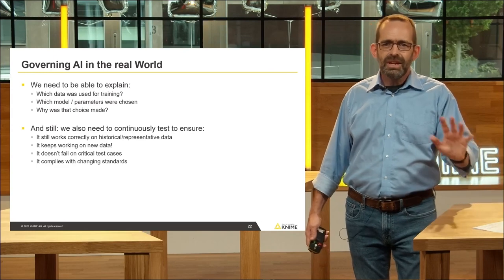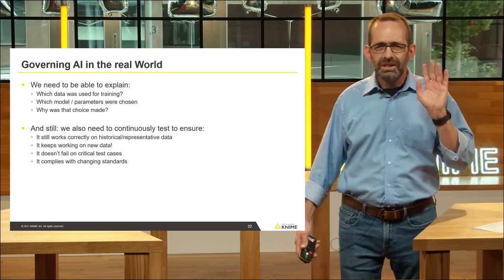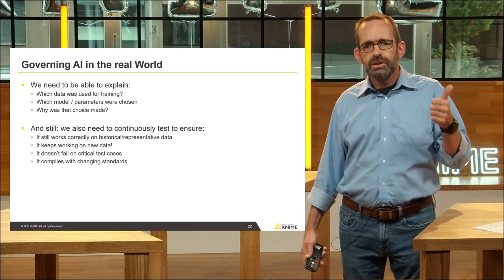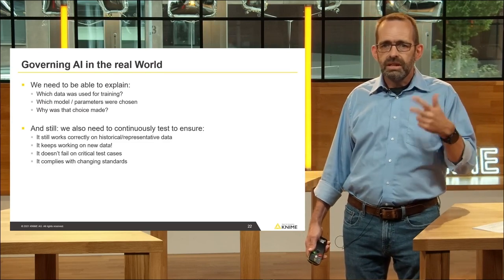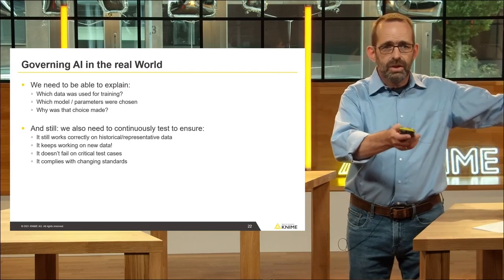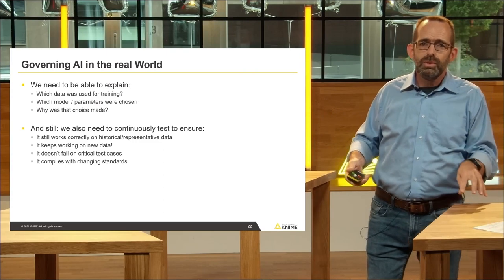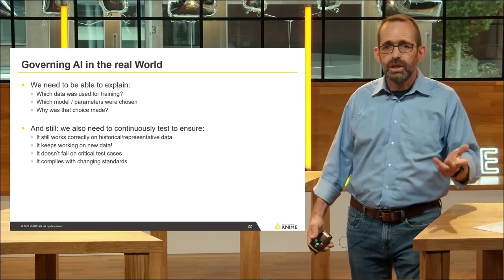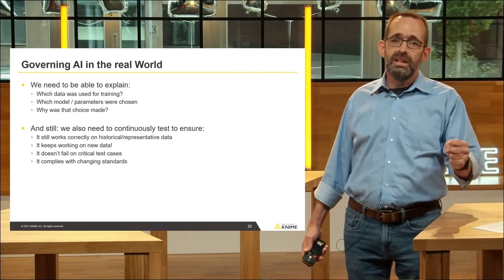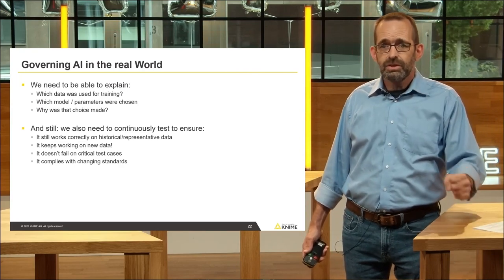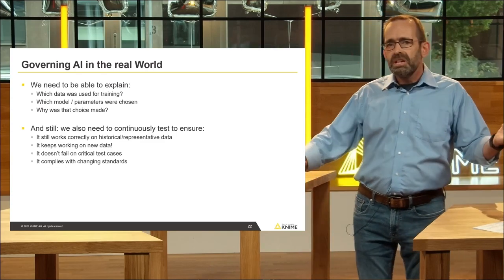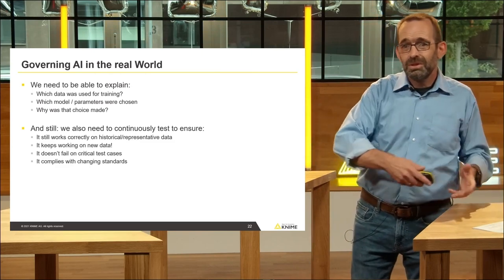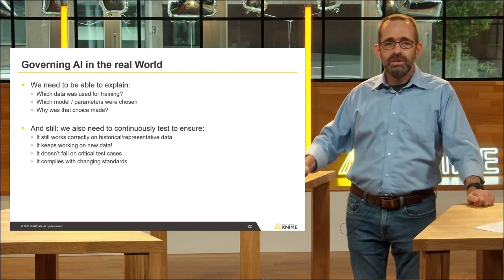And we still, even after, let's assume we picked the right data, right method, the model actually does really what we want it to do and we'll never be 100% sure for complex systems. We still need to make sure the model works with historical representative data. Suddenly, we're training a new model and it does something completely weird on past data, not a good idea. We want to make sure it keeps working on new data. Reality changes, so we need to make sure that the model that we trained a year ago still works today, or we need to constantly update it. It doesn't fail on critical test cases, but we want to make sure that, okay, for these types of eggs, we really don't want to break eggs, so no matter what we do, we're going to test for that explicitly. And of course, it may need to comply with changing standards. Some things, what you consider not biased 20 years ago is biased or discriminating 20 years later, so maybe you need to adjust there as well.